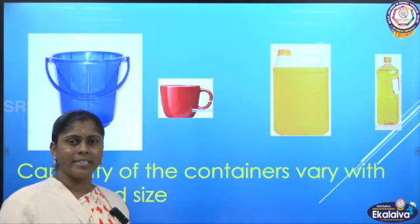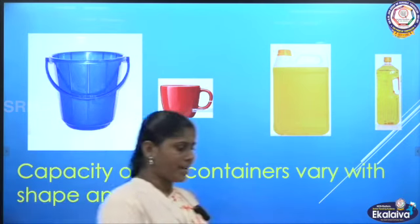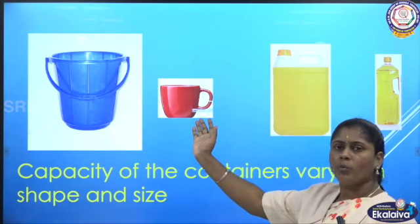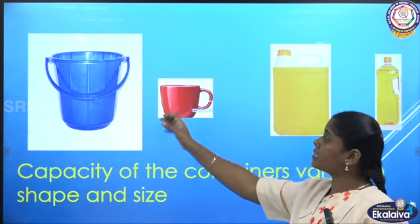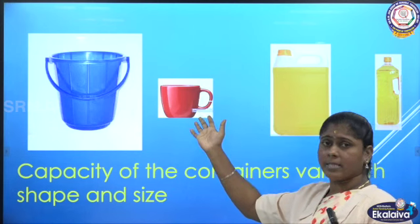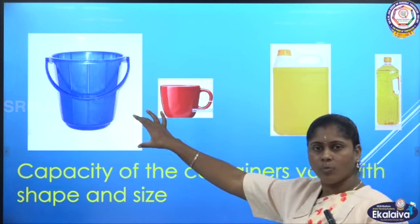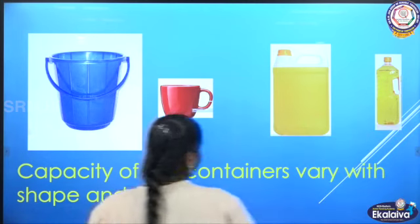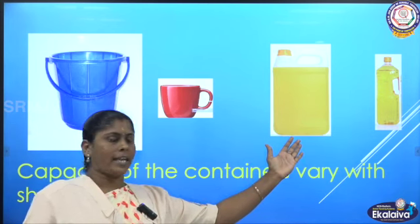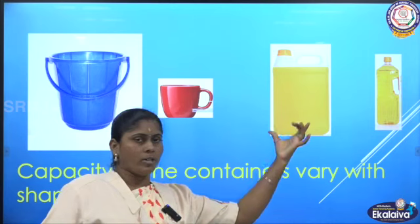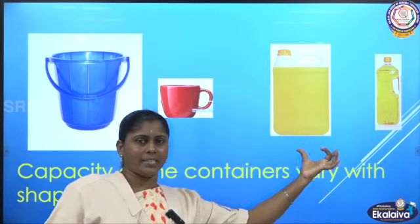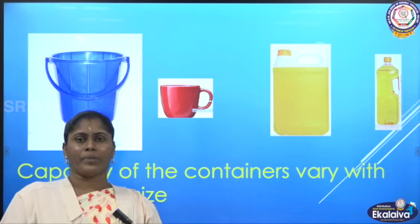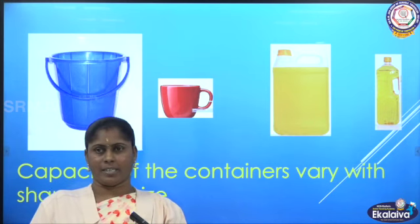The capacity of containers varies with shape and size. Look at a bucket and a cup — by seeing their shape and size, you can tell that the bucket can hold more water than the cup, so the capacity of the bucket is more than the capacity of the cup. Look at these two oil cans — this one can hold more oil than the other because it is bigger in size and shape. Each container has its own capacity and it varies depending upon the shape and size of the container.